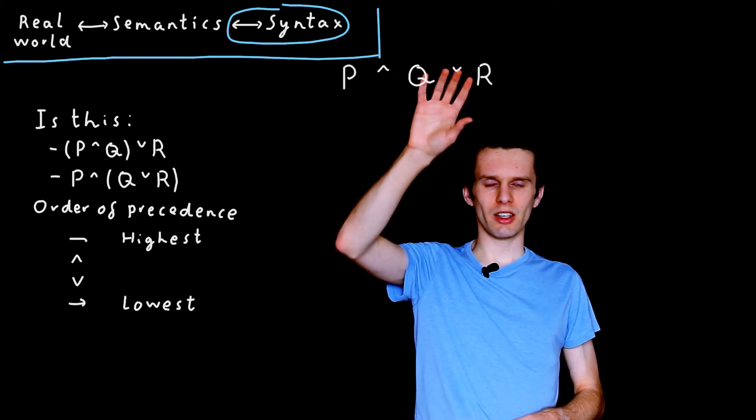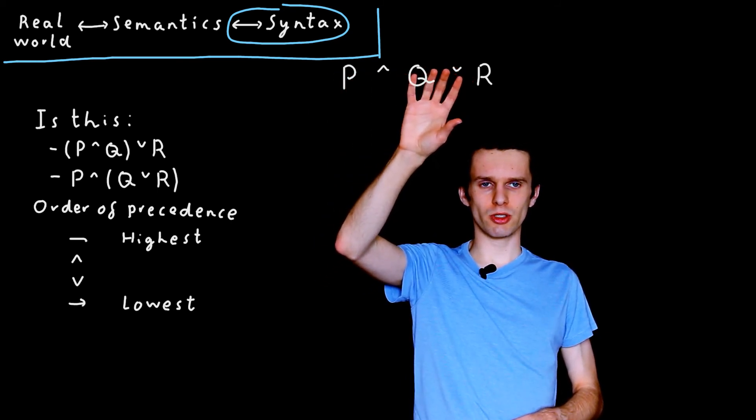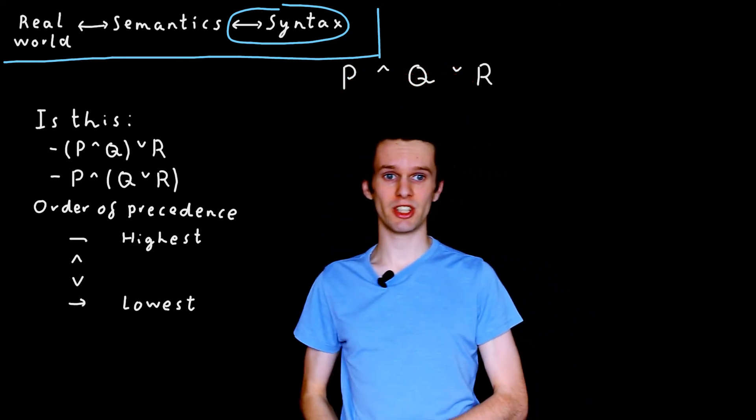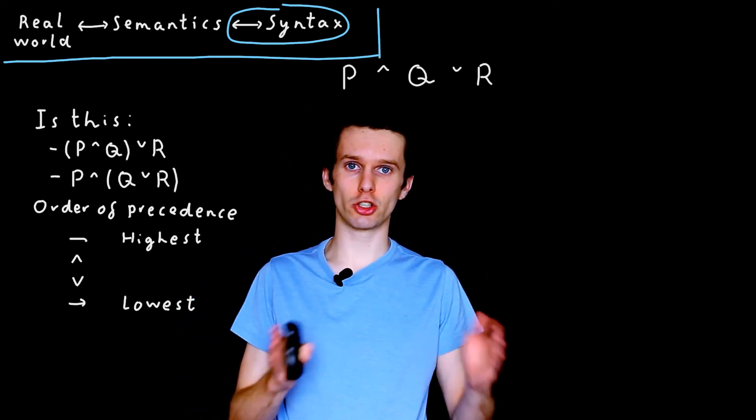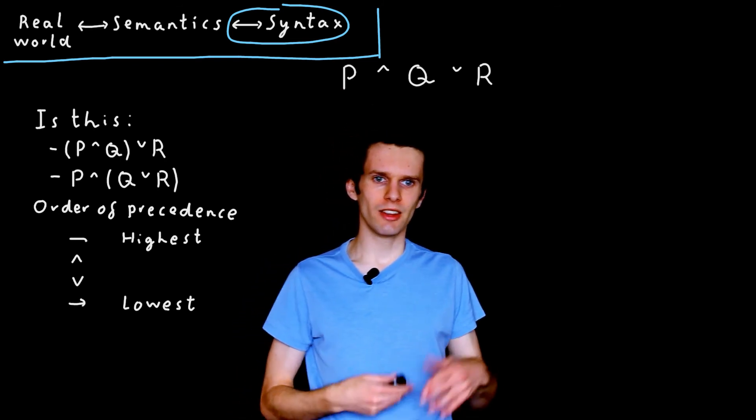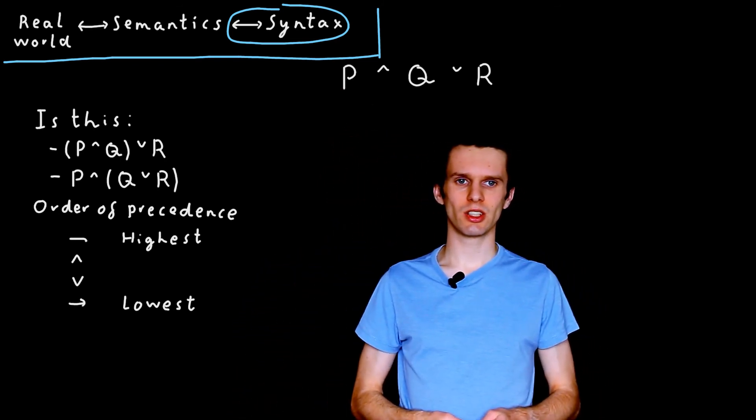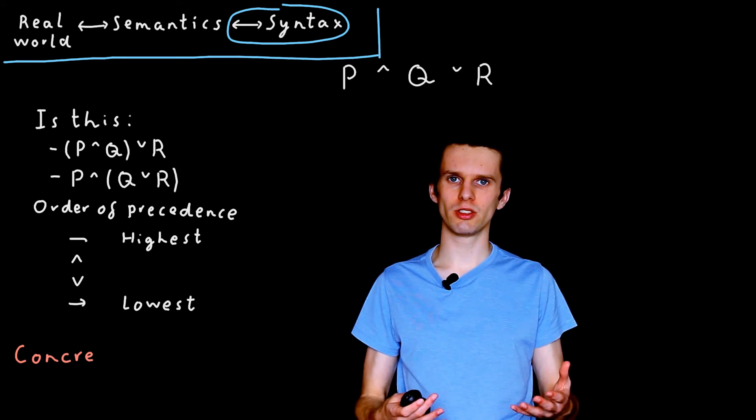So what we've got here is a string of symbols, which I've written down, and which in a computer, if I were to type them in, might be represented as a string. And this form of writing down syntax is known as concrete syntax.